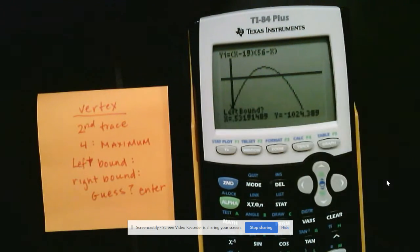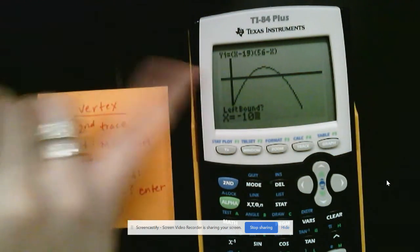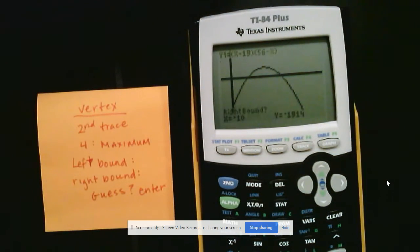And here's my left bound. So as I said, I'm going to go to negative 10. And I'm just going to type in negative 10 and press enter because I know my window goes all the way to negative 10. Now, I can't go past that. It will give me an error.